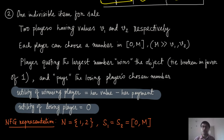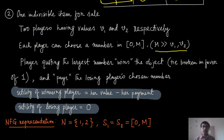Now consider a different game: suppose there is one indivisible item for sale — a painting — with an owner willing to sell it. There are two interested players with values v1 and v2 respectively. Each player chooses a number from the interval [0, m], where m is a very large number much larger than either player's value. Both players simultaneously submit numbers a1 and a2.